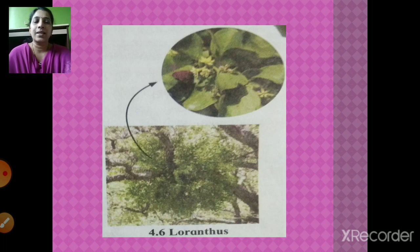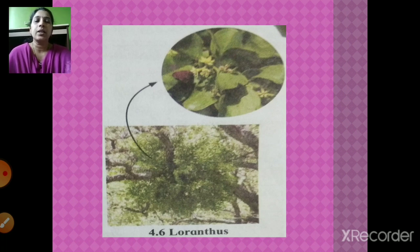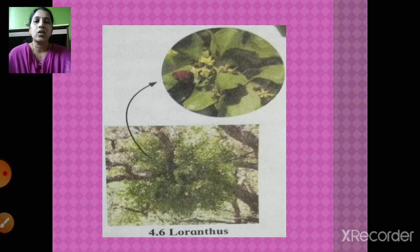Let's recap what we learnt in today's session. First, plants produce carbohydrates by photosynthesis. Then we saw what carbohydrates and proteins are made up of. We covered nitrogen fixation by biological and atmospheric methods. We saw symbiotic nutrition with the example of lichen. And we saw heterotrophic plants — partially parasitic and completely parasitic plants. In the next session, we will learn more about the different types of plants. Goodbye!